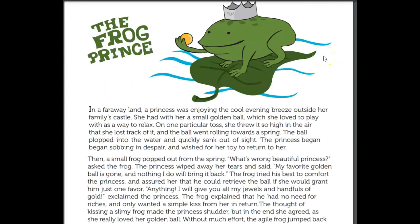This is the story of The Frog Prince. In a faraway land, a princess was enjoying the cool evening breeze outside her family's castle. She had with her a small golden ball which she loved to play with as a way to relax. On one particular toss she threw it so high in the air that she lost track of it and the ball went rolling towards a spring. The ball plopped into the water and quickly sank out of sight. The princess began sobbing in despair — she was really, really sad — and she wished her toy to return to her.